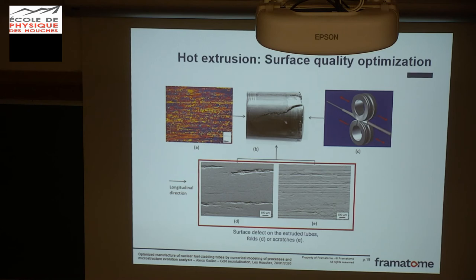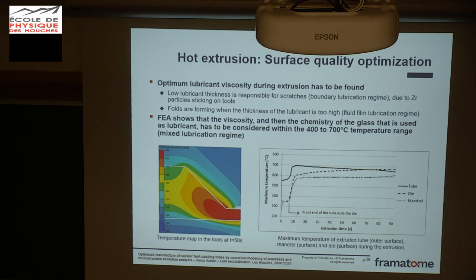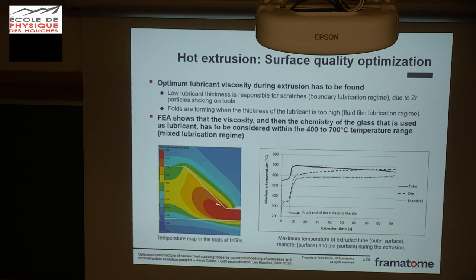We also need to improve surface quality after extrusion, which is mainly linked to the lubrication process. If the lubricant viscosity is not right at the extrusion temperature, we will have either too little lubricant — causing scratches — or too much lubricant — causing folds. To have the right lubricant thickness we need the right viscosity as a function of temperature, which is why we need this model to calculate the material temperature during extrusion.